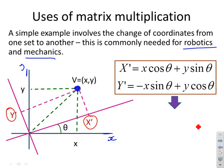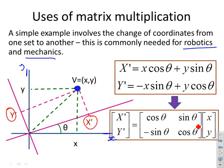I can do a bit of algebra: x prime is x cos theta plus y sin theta, y prime is minus x sin theta plus y cos theta. The key thing is I can use a matrix vector format to represent what's going on.